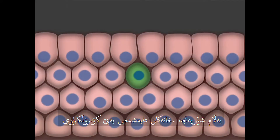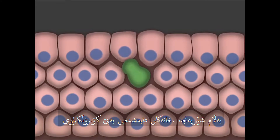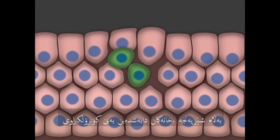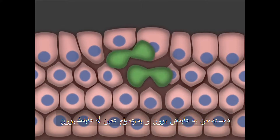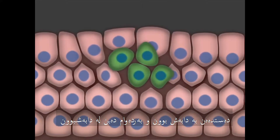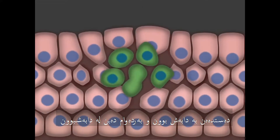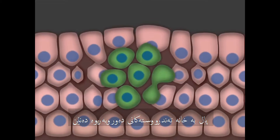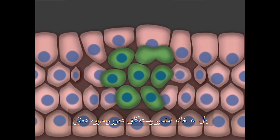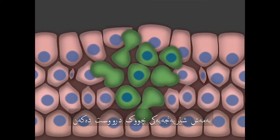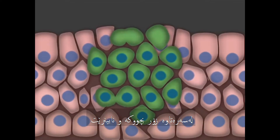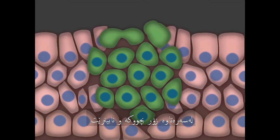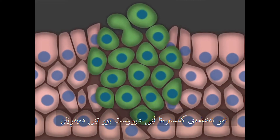Cancerous cells, on the other hand, divide uncontrollably. Here a cancerous cell, colored green, starts to divide and it keeps dividing. The rapidly dividing cells push aside the healthy cells around them. They form a small cancer that at first is too small to see and then begins to grow beyond the organ where it started.